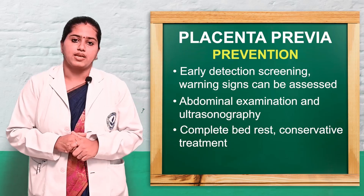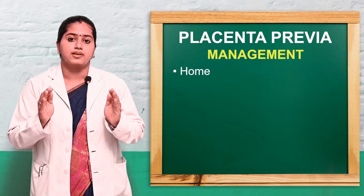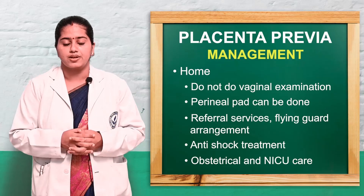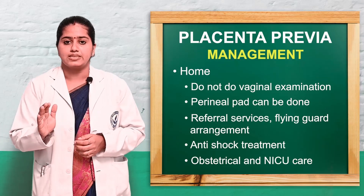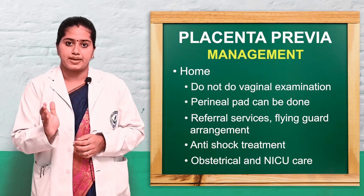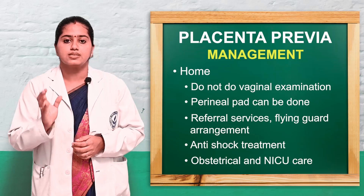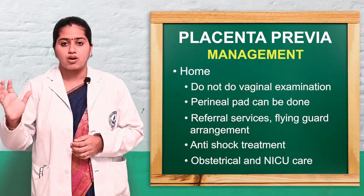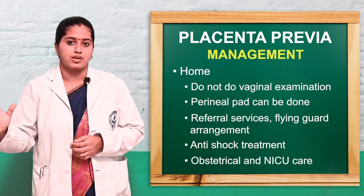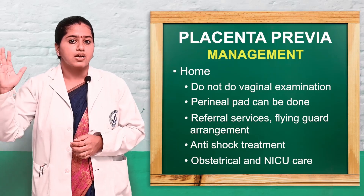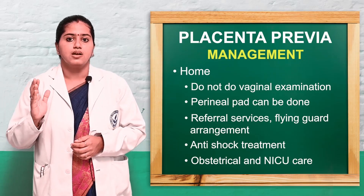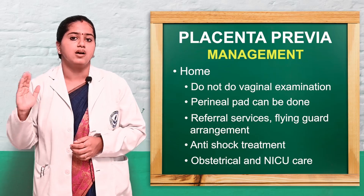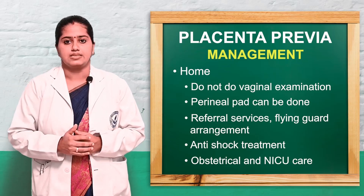At home, if a woman complains of bleeding, do not perform vaginal examination. A perineal pad can be placed. Assess for shock and arrange referral. A flying squad can be called, anti-shock measures initiated, and the patient transported to a hospital with an obstetrical ICU and neonatal services.